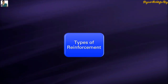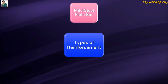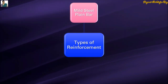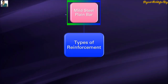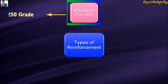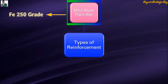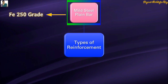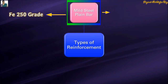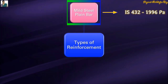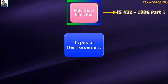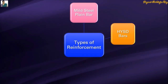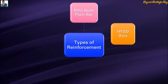The first type of reinforcement is mild steel plain bar. Mild steel plain bar is also known as Fe 250 grade steel. The relevant IS code for mild steel is IS 432:1996, Part 1.